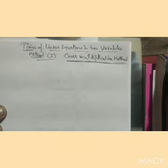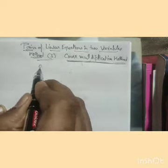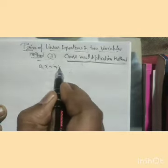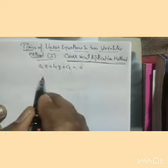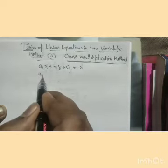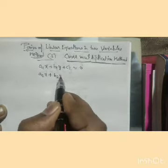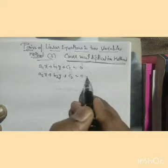Let us consider a pair of equations. We have A1x plus B1y plus C1 equal to zero, and A2x plus B2y plus C2 equal to zero.